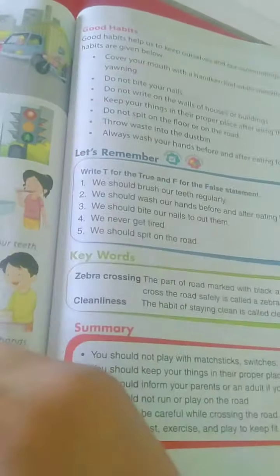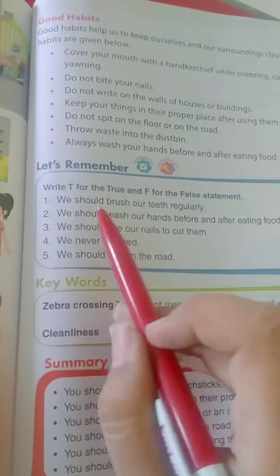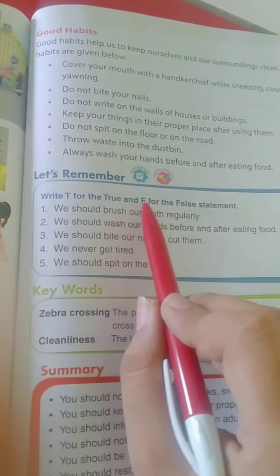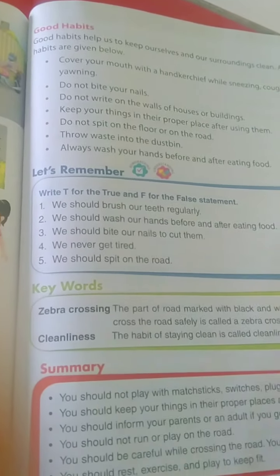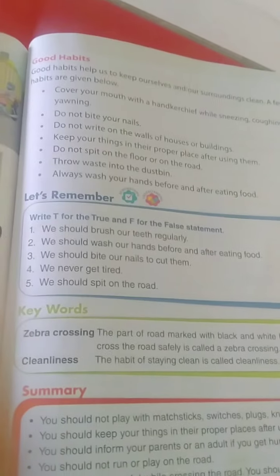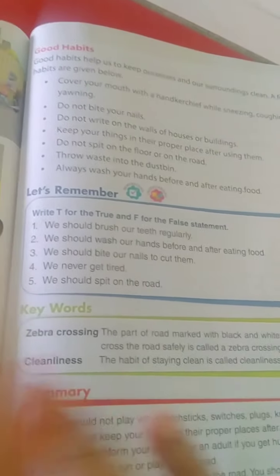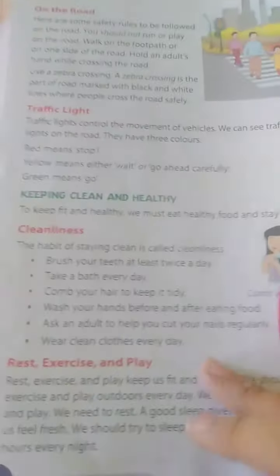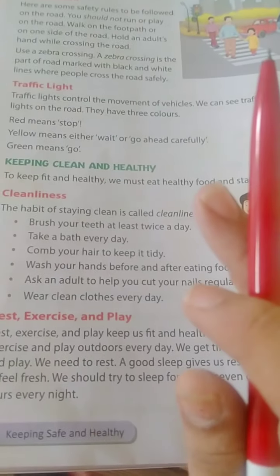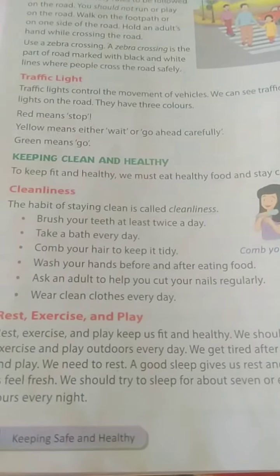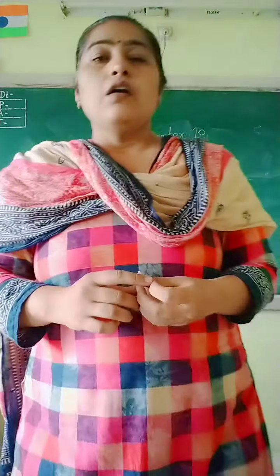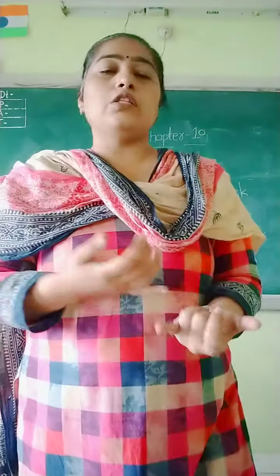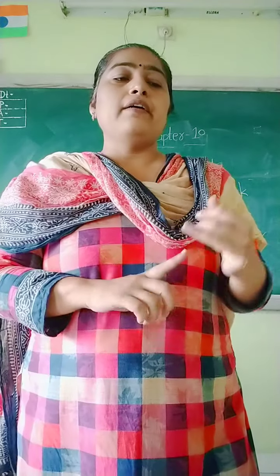Okay, so here the textbook part is completed. Now let's understand what this chapter wants to tell you. This is all about safety rules — on the road, traffic light, cleanliness, rest, exercise and play, and good habits.